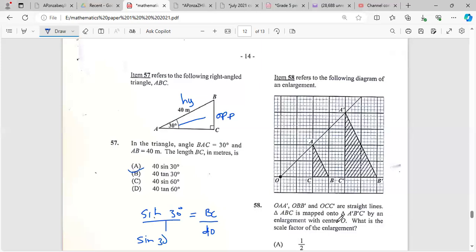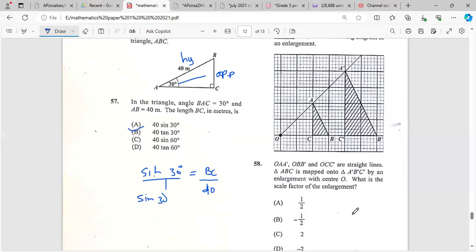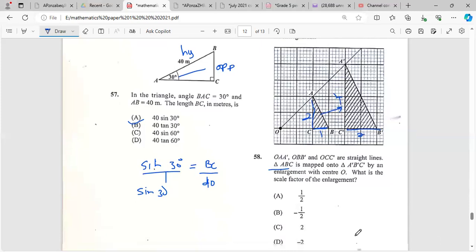Point A maps onto A' by an enlargement with center O. What is the scale factor of the enlargement? Which one is the original? That's OA. The small one maps onto the big one. So we can get the scale factor by the size. This is 1, this is 2. This is 2, this is 4. So the scale factor would be 2. That's C.